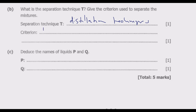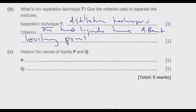The criterion is that the two liquids have different boiling points. If the boiling points are close, use fractional distillation; if they are wide apart, use simple distillation. For question C, deduce the names of liquids P and Q — P would be water and Q would be alcohol, or vice versa. These two are the perfect examples of miscible liquids. Once you do this, you get these five marks.